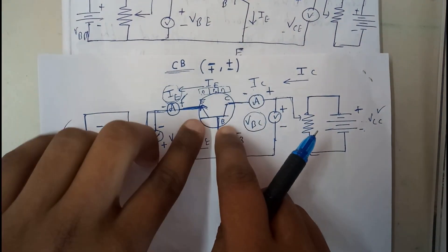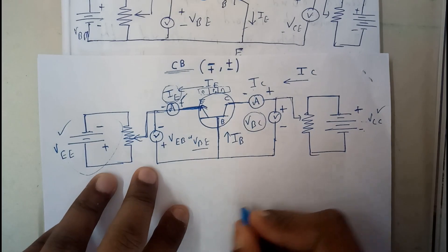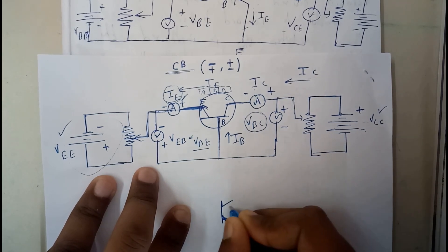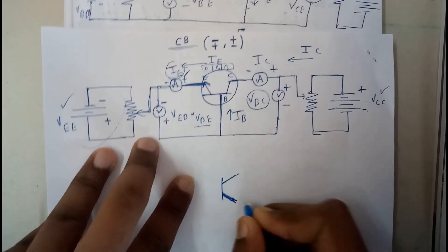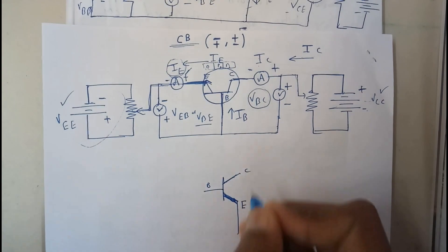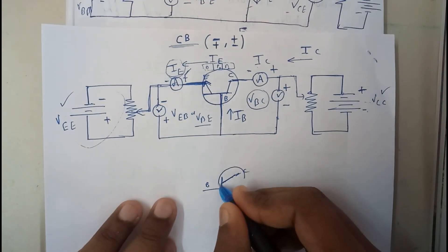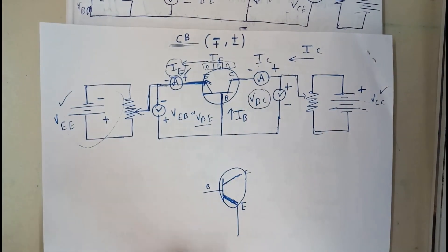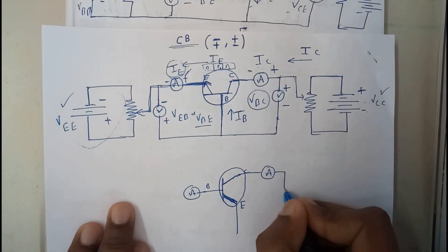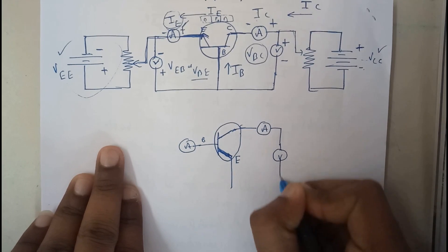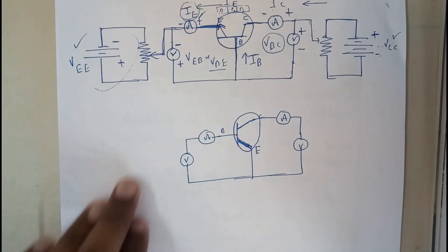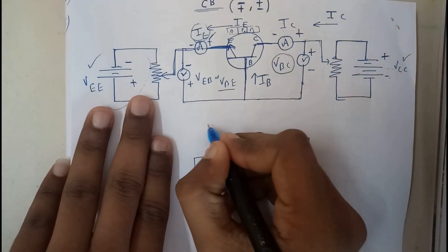We know that this is our transistor diagram, so I need to make the emitter as common. I will be drawing the transistor in this manner. This will be my emitter, base, and collector. Similar to common base, here also we have a configuration with an ammeter in series and a voltmeter in parallel.